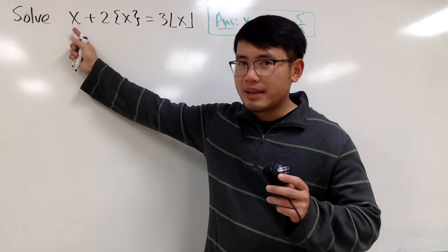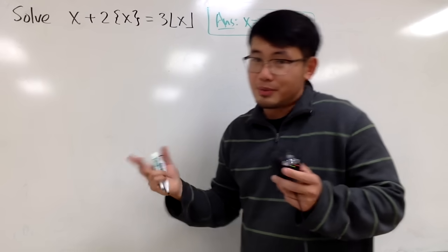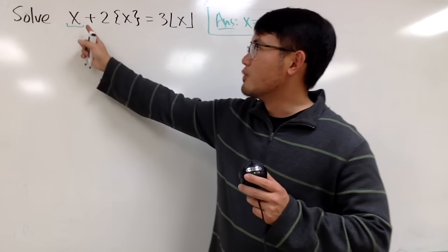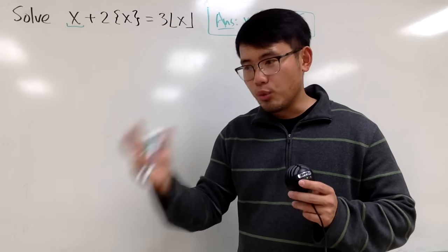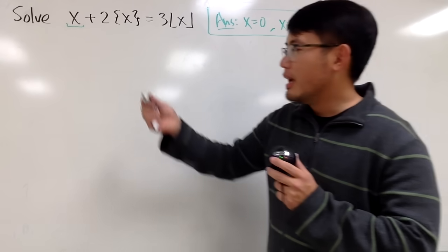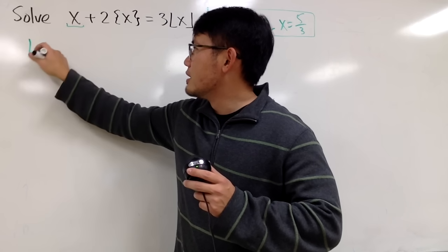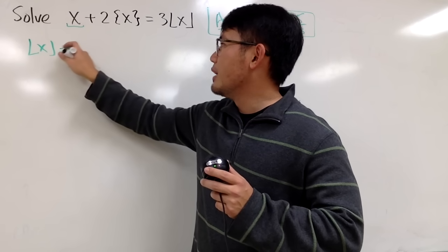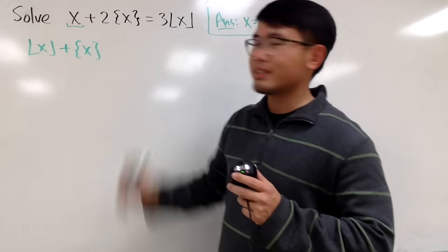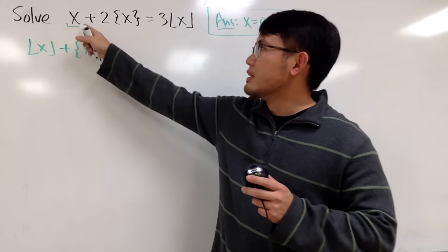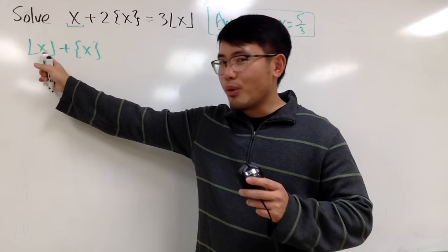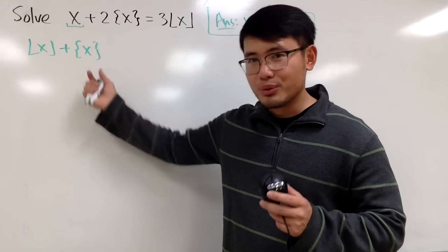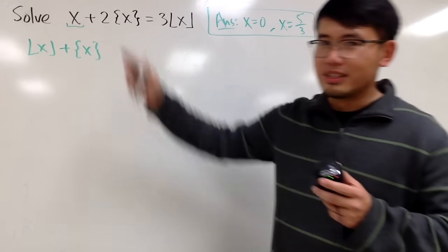I cannot just combine x with 2 times the fractional part of x — we cannot do that. But this x right here we can actually rewrite, because for any real number x, we can write it as the floor of x plus the fractional part of x. The floor of x is the greatest integer less than or equal to x. Just a quick example: if x is 4.2, then the floor of 4.2 is 4, and the fractional part of 4.2 is just 0.2. Four plus 0.2 is of course 4.2. So that's the idea.